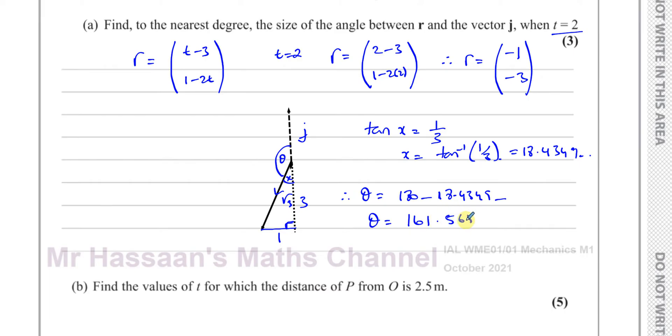So therefore the angle between r and j when t equals 2 is 162 degrees, because they say to the nearest degree, so I have to round it to the nearest whole number. So there's the answer to part a, quite straightforward.